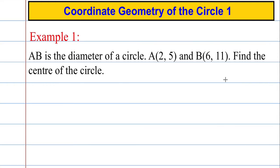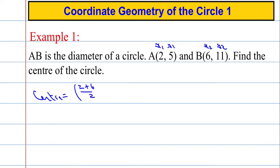Let's have a quick look at an example. AB is the diameter of a circle. A is the point (2, 5), B is the point (6, 11) — find the centre of the circle. I'll label these x1, y1 and x2, y2. So the centre is found by doing x1 plus x2: 2 plus 6 divided by 2, and y1 plus y2: 5 plus 11 divided by 2. 2 and 6 is 8, divided by 2 is 4. 5 and 11 is 16, divided by 2 is 8. So the centre of our circle is the point (4, 8).